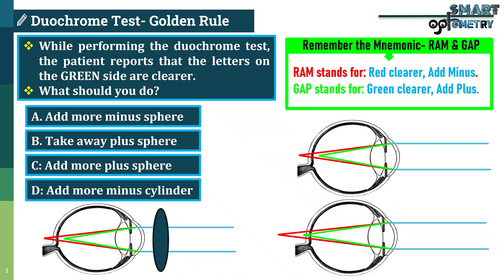Applying our GAP rule — green, add plus — to the question: the patient sees green clearer, so we must add more plus sphere. The correct answer is Option C: add more plus sphere.